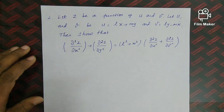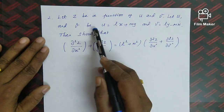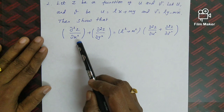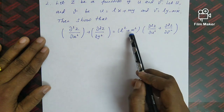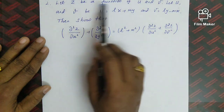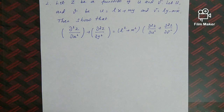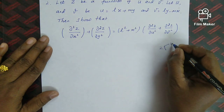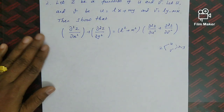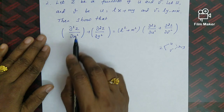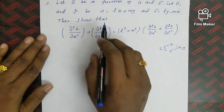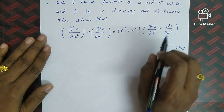Now look at question 2. Let z be a function of u and v, where u = lx + my and v = ly − mx. Show that ∂²z/∂x² + ∂²z/∂y² = (l² + m²)(∂²z/∂u² + ∂²z/∂v²). Here z is a function of u and v, and u and v are functions of x and y.